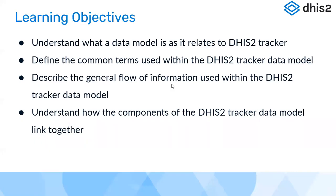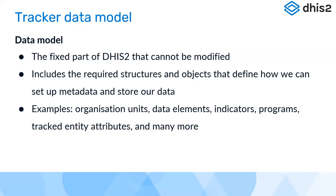Let's look at what we're going to cover today. The first objective is to understand what a data model is and how it relates to the DHIS2 tracker. We'll then define common terms used within the DHIS2 tracker data model, describe the general flow of information, and finally understand how the components of the DHIS2 tracker data model are linked together — because these are not isolated building blocks; they're all interconnected, which makes the DHIS2 tracker flexible in rendering different use cases.